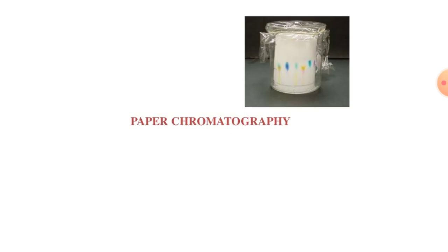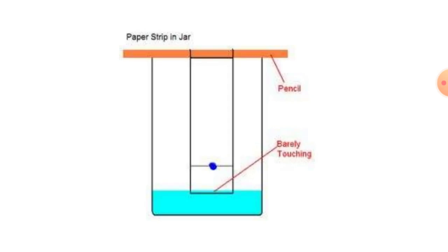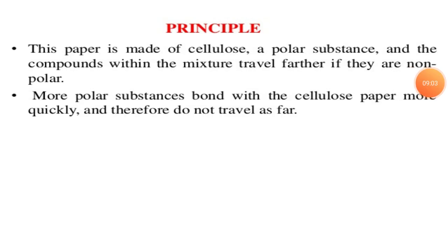In paper chromatography, a paper strip is hung using a pencil inside a jar, with solvent at the bottom. The principle is that paper is made up of cellulose, a polar substance. Compounds in the mixture travel further if they are non-polar. More polar substances bond with the cellulose paper more quickly and therefore do not travel as far.